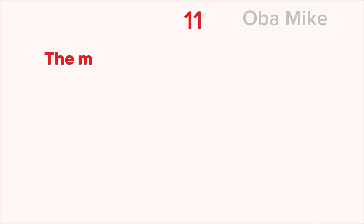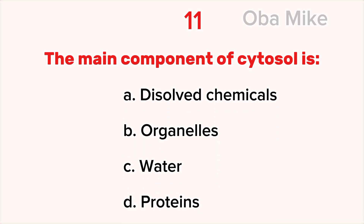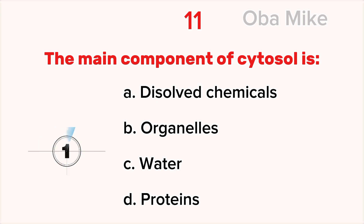11. The main component of cytosol is A. Dissolved chemicals, B. Organelles, C. Water, D. Proteins. The correct answer is C. Water.